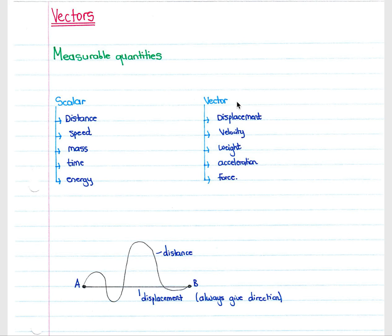A vector has magnitude and direction. For displacement you would say four kilometers north or four kilometers south. For velocity, four meters per second north or four meters per second east. For weight, 45 newtons down. The same applies to acceleration and force. When asked about a scalar quantity there is no direction, whereas for a vector there is direction, and you must always include the direction — otherwise the answer is incorrect.